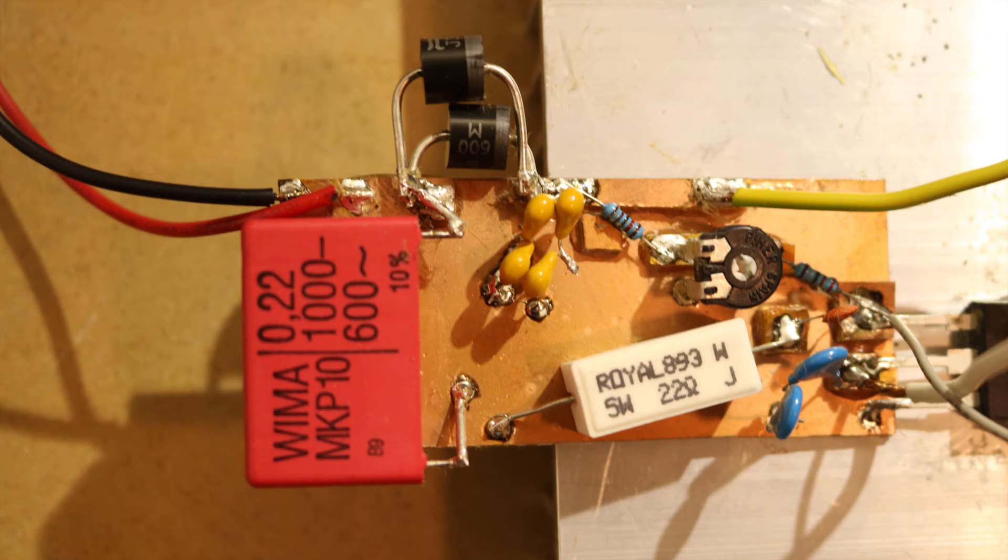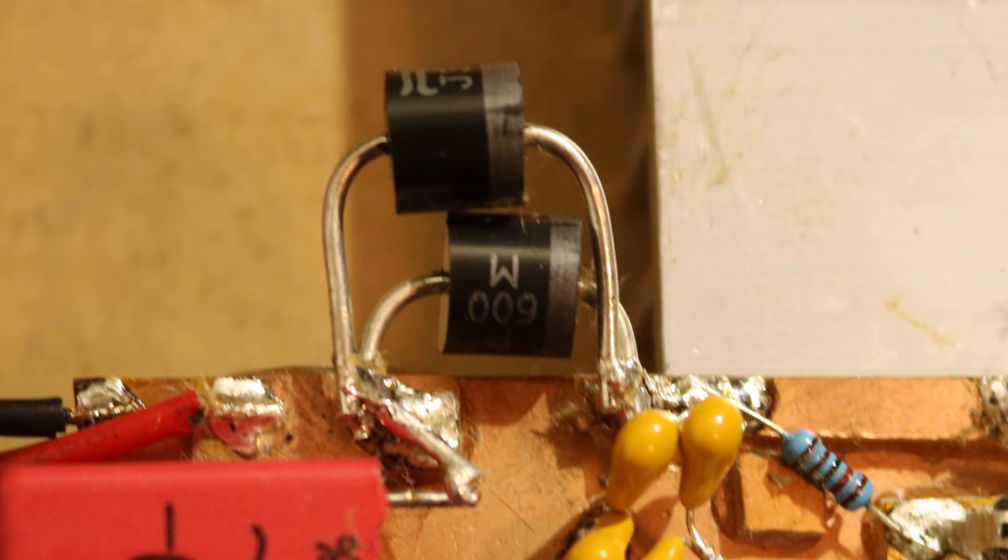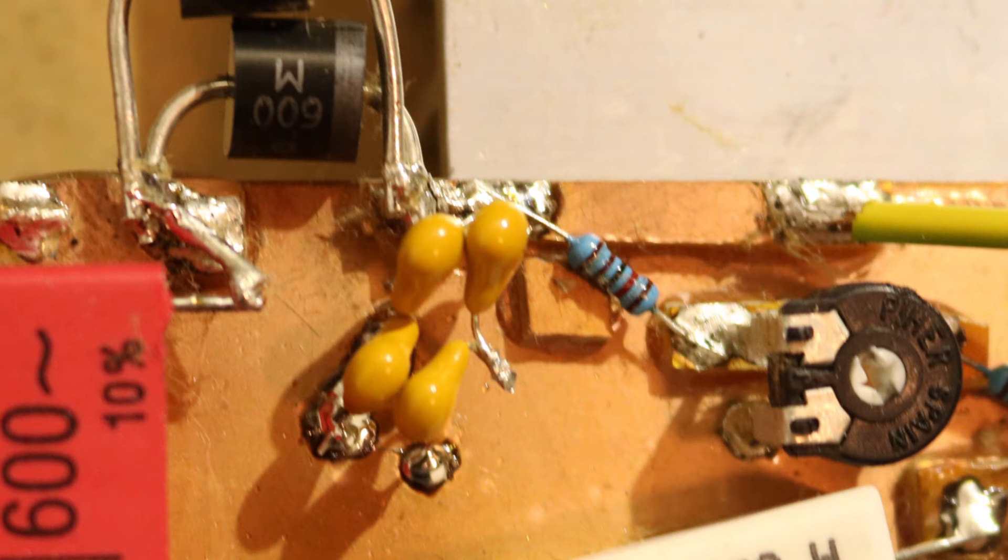From the positive side to ground I soldered a 220nF 600V film capacitor. After that there are two P600M diodes in parallel to the next pad, and from there there is a 4.7uF capacitor to ground.